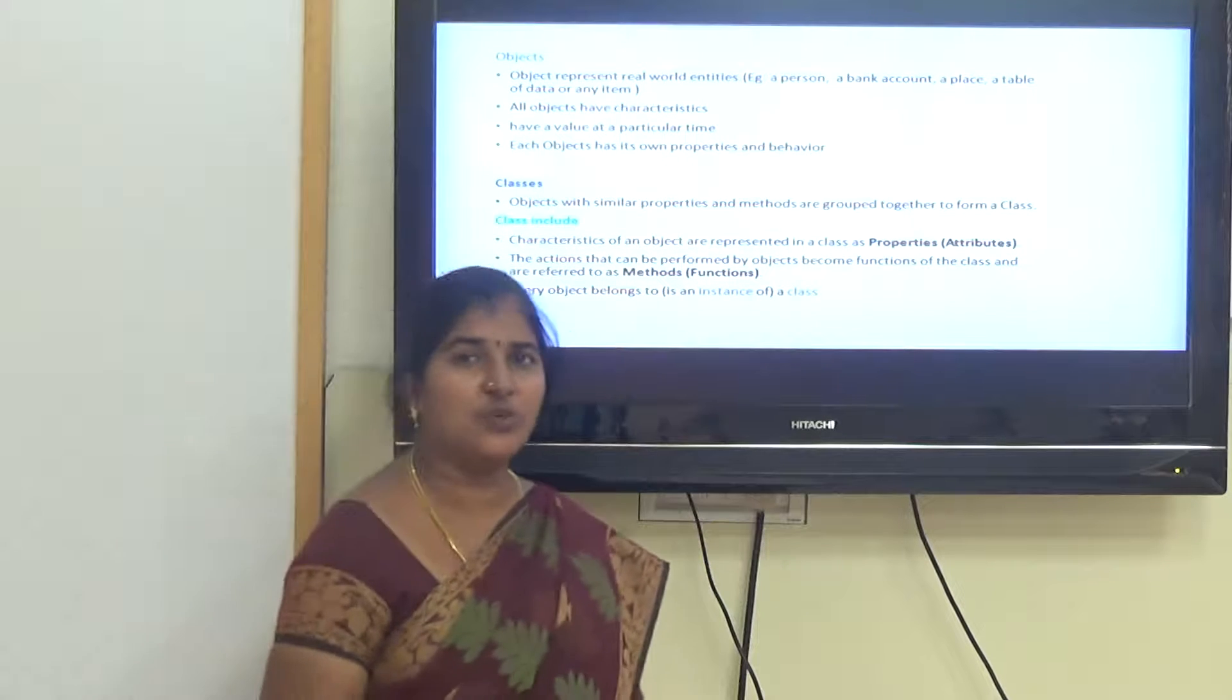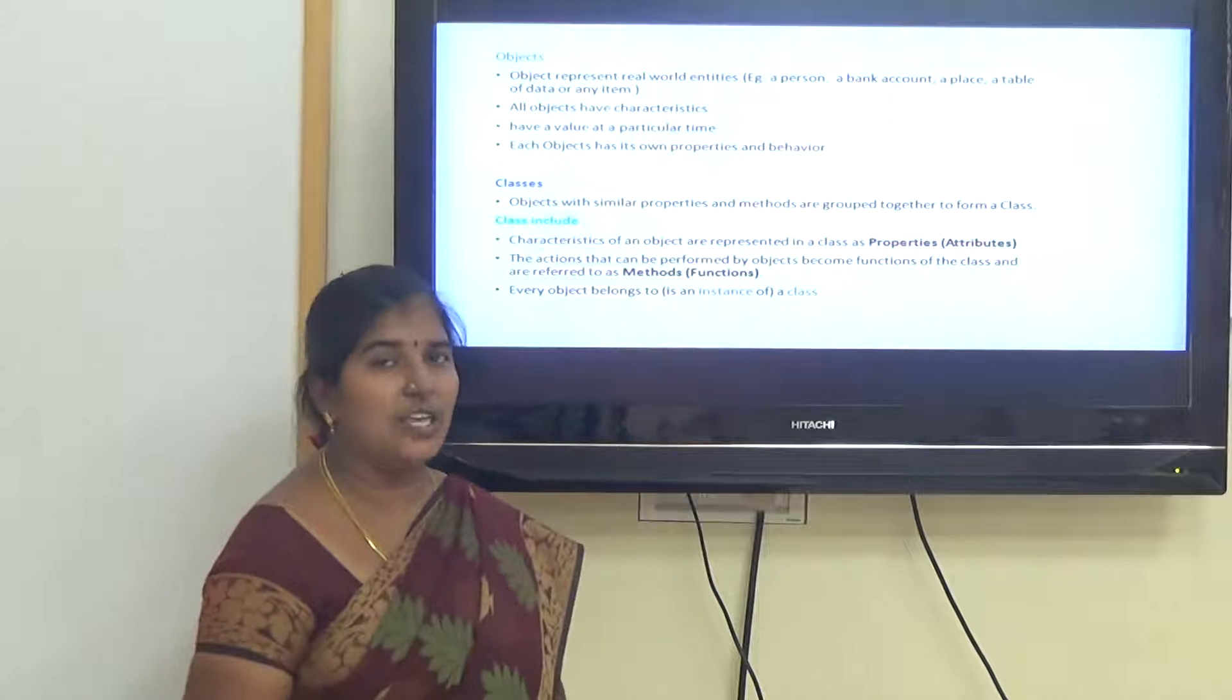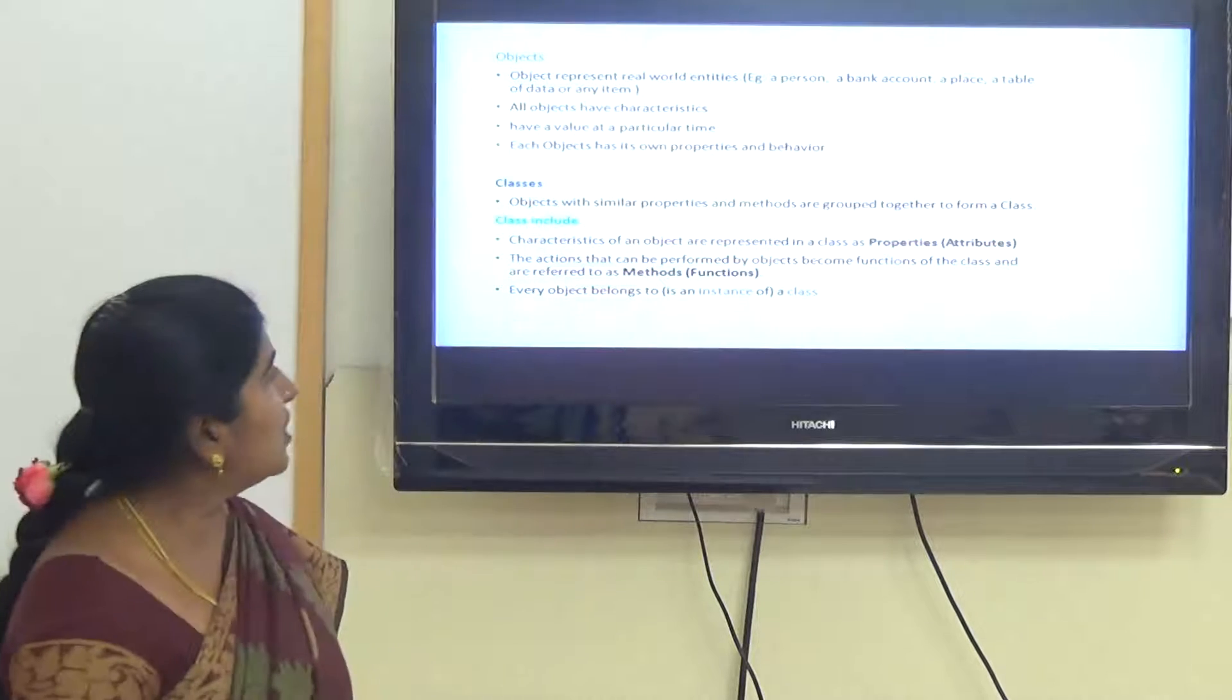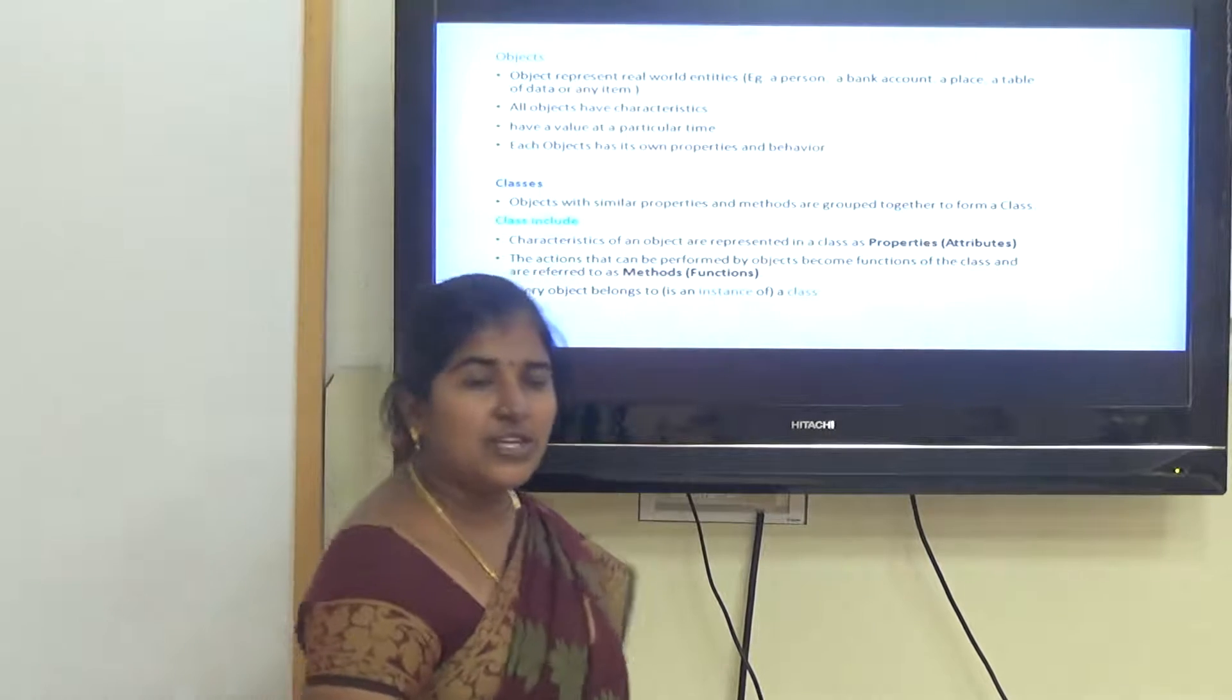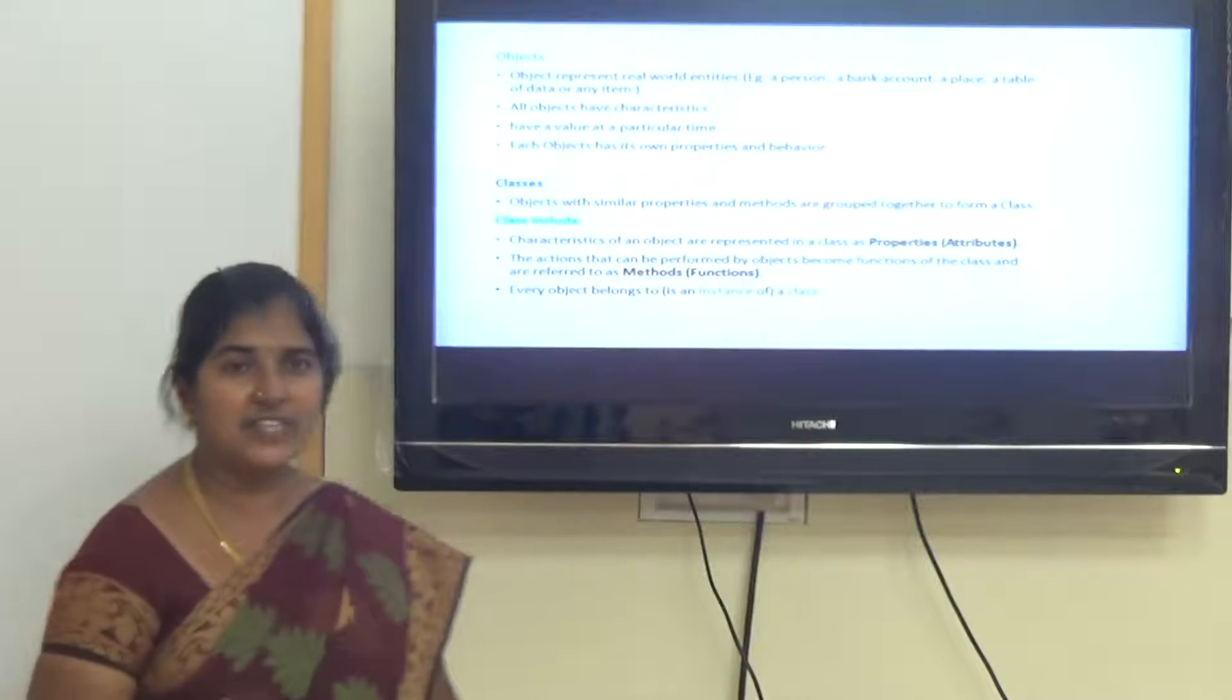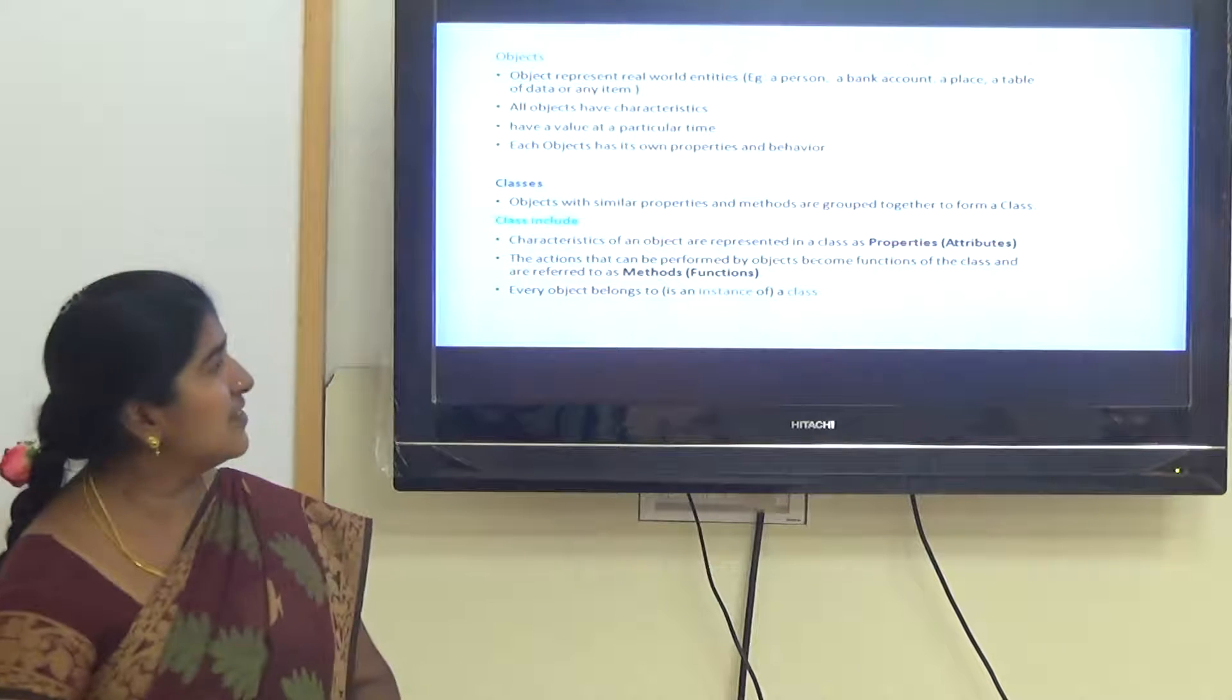Characteristics of an object can be described in terms of properties and behaviors. Properties and behaviors of each object have unique values. For any programming language, the first important thing is identifying objects. Next we are going to see about classes.